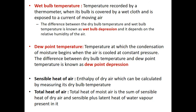Sensible heat of air is the enthalpy of dry air, which can be calculated by measuring its dry bulb temperature. Using the DBT value, you can find the enthalpy of dry air, which is called the sensible heat of air. Total heat of moist air is the sum of the sensible heat of dry air plus the sensible and latent heat of water vapor present in it.